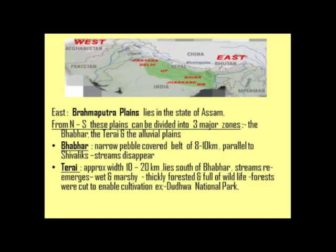Now moving from north to south, the Northern Plains can be divided into three major zones: Bhabar, Tarai, and the Alluvial Plains. Alluvial Plains have two further divisions. Bhabar is a narrow belt of 8 to 10 km and it runs parallel to the Shivalik Hills. We call this the pebble-covered belt.